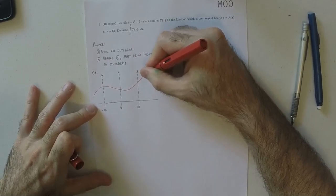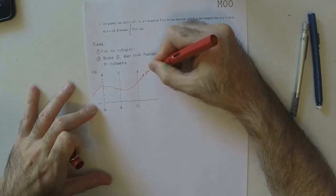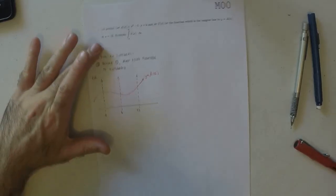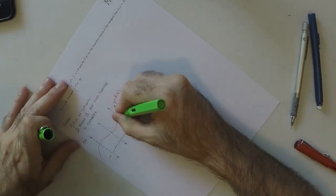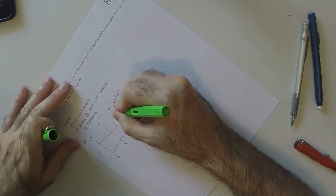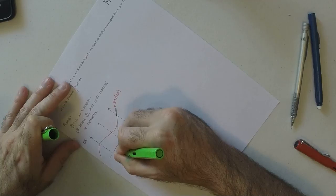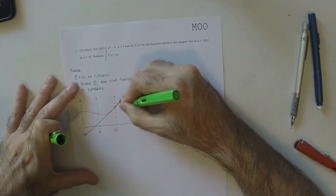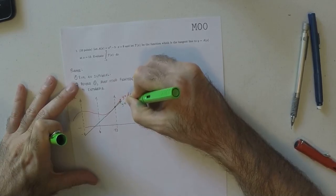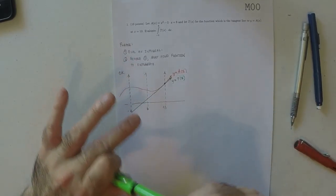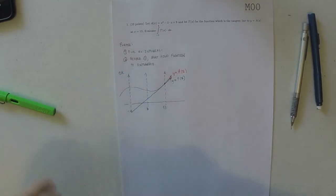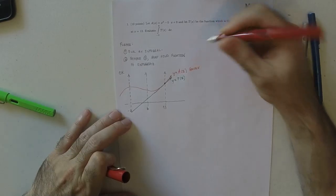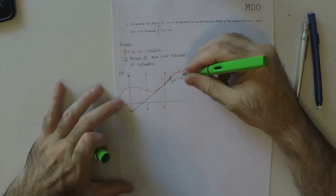So this is the plot of y is A of x. And then at 13, this function has a tangent line that looks something like this, maybe. So that's y is T of x. And you were given this one, and you need to find this one.